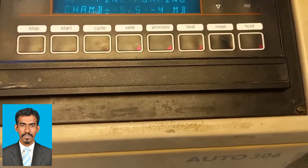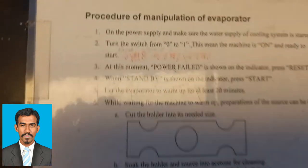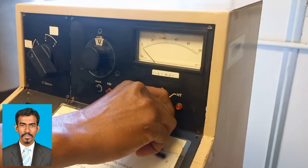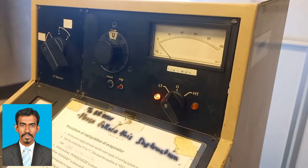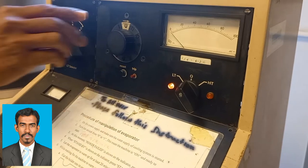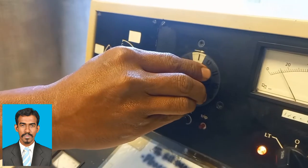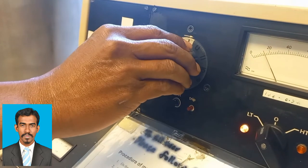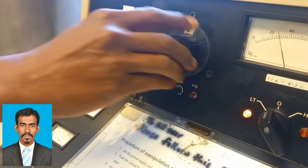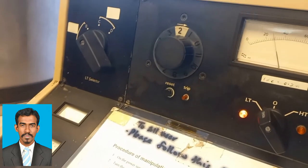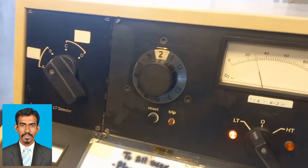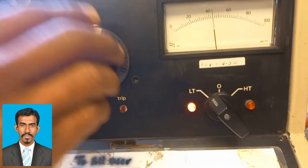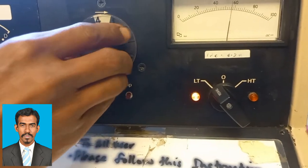These are the guidelines for the operation of this machine. Once pumping is done, we move the knob to the LT side and gradually increase the current starting from 1, 2, up to 7 — 7 is the maximum current. We gradually increase the current and can observe the phenomena, which takes about 2 to 3 minutes.